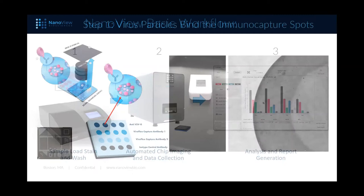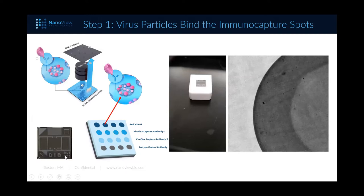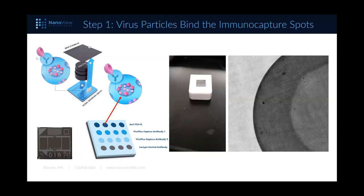The core of the technology is the single chip — single-use chips that come functionalized out of the box with a microarray on them. The microarrays are mostly antibody arrays, though other capture types can mediate binding too. During the sample incubation stage, all we do is take out a chip — seen here placed on top of a thumb drive — and on that chip is a multi-spot array of different capture types. In the Lentiview assay, the anti-VSVG capture row in dark blue is the primary spot of interest.